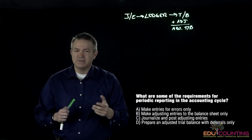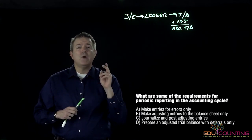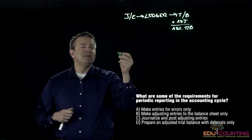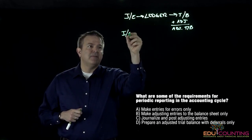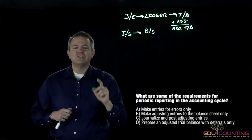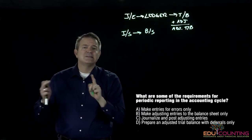Make adjusting entries to the balance sheet only? No. Remember whenever we make an entry we need to make the entry so that it hits the income statement and the balance sheet together. One side is going to be the income statement, one side is going to be the balance sheet.